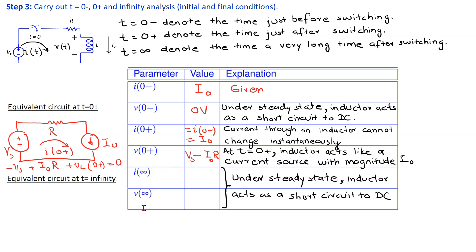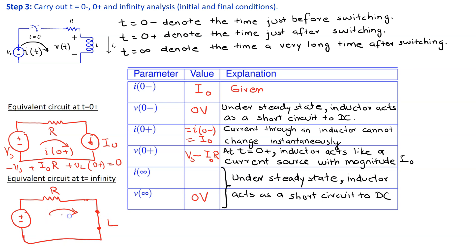I(∞) and V(∞) denote the current and voltage a very long time after switching. Under steady state, the inductor acts as a short circuit to DC, so V(∞) equals 0 volts. The equivalent circuit at T equals infinity consists of the voltage source Vs and resistor R with the inductor as a short circuit. Applying Ohm's law, I(∞) equals Vs/R. This concludes the initial and final value analysis.